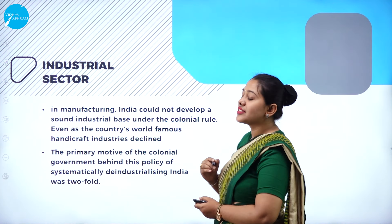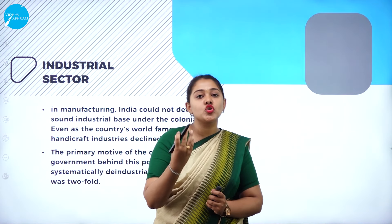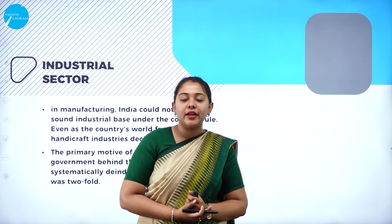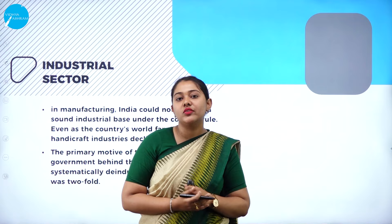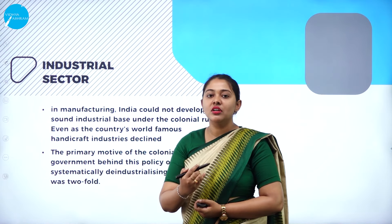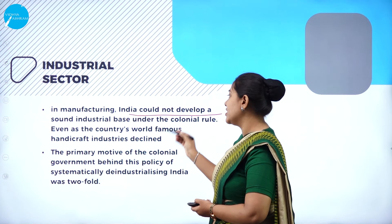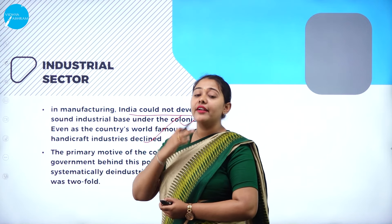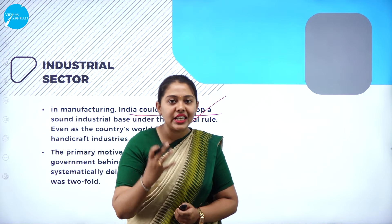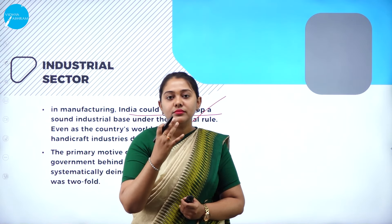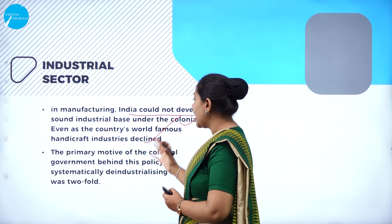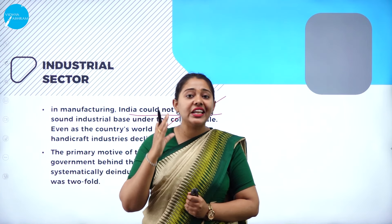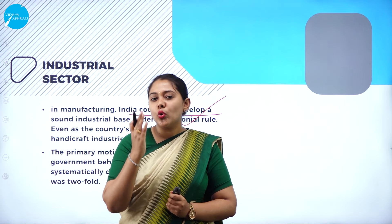Moving forward, let us understand the industrial sector. We were strong in the handicraft industry - handmade products were famous and we had a worldwide market for handmade crafts with high standards and quality in manufacturing. What happened during the colonial rule? India could not develop a sound industrial base under colonial rule - even as the country's world-famous handicraft industries declined. Why? Because the colonial government did not support the industries and did not give opportunity for industries to grow. They started exploiting Indians.